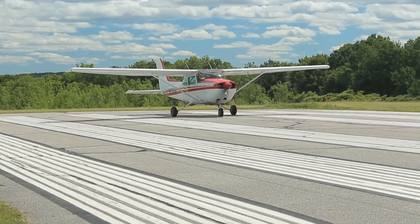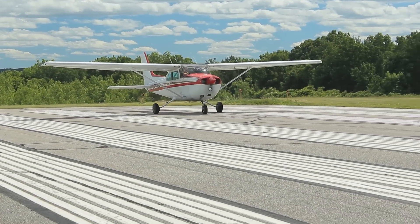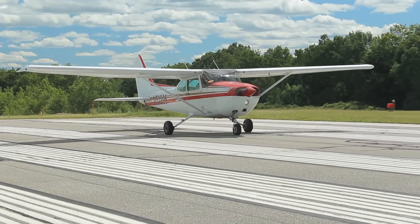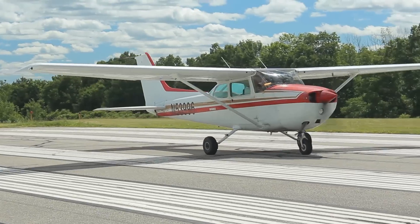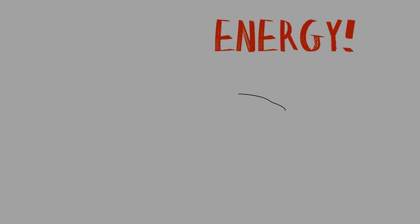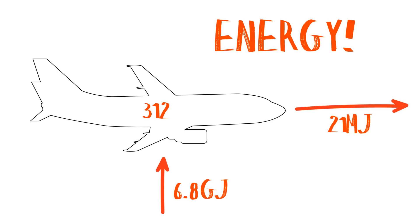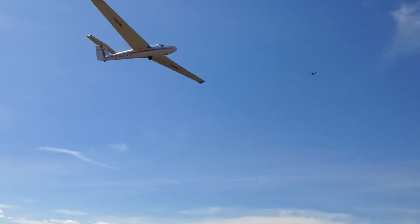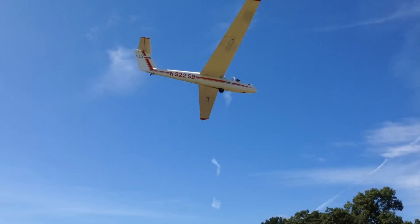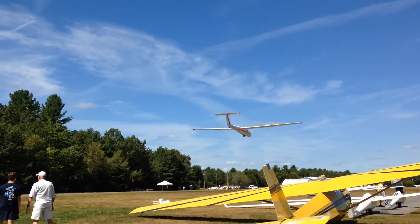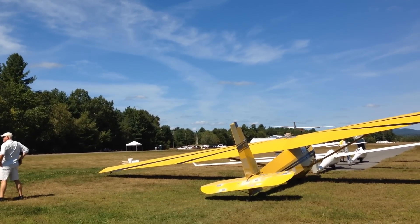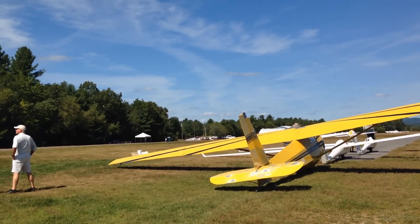There's only one thing that makes airplanes fly, and that's energy. However, this energy can come in many different forms, as I've demonstrated in another video by adding up the kinetic, potential, and fuel energies to arrive at the total energy of the aircraft. But all we can do as pilots is control how we spend these various quantities to get safely from point A to point B.